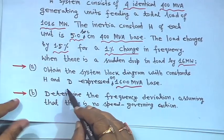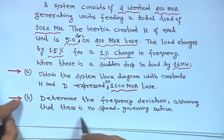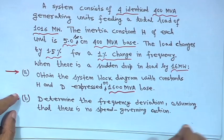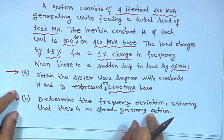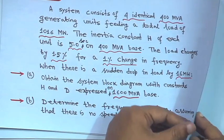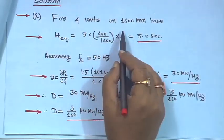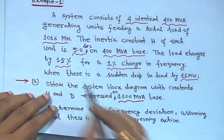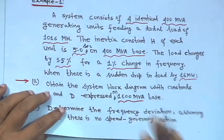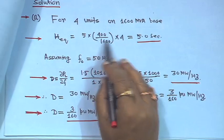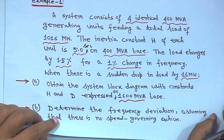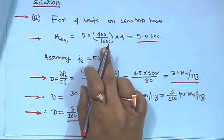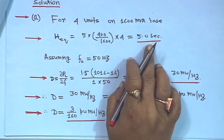Second, determine the frequency deviation assuming no speed governing system — that means delta P_g equals zero. For 4 identical units on a 1600 MVA base, H_equivalent equals 5 × 4 × 400 divided by 1600, which gives H_eq equal to 5 seconds — the same as the individual unit value.